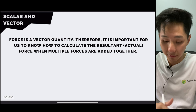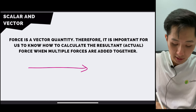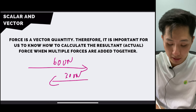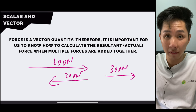Since force is a vector quantity, it's important to know how to calculate the resultant force when multiple forces are combined. If there's a 600 Newton force to the right and a 300 Newton force to the left, the resultant is 300 Newton to the right. Direction is crucial — forces to the right and left are very different things.